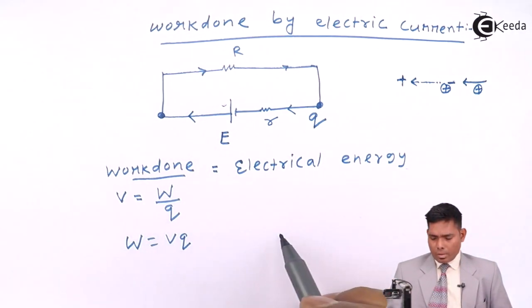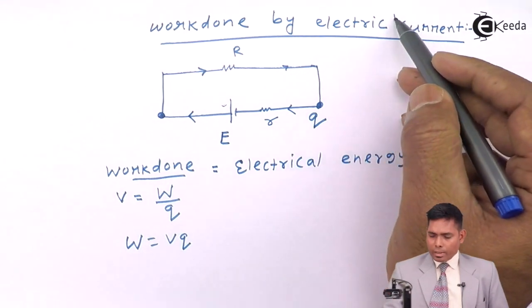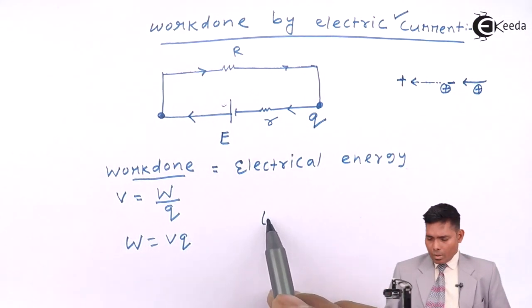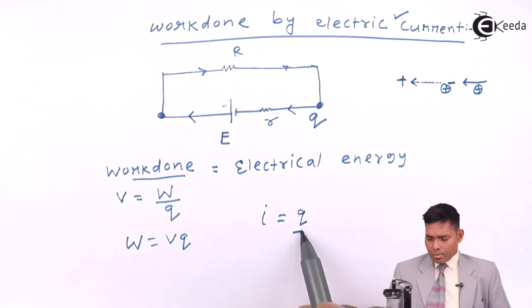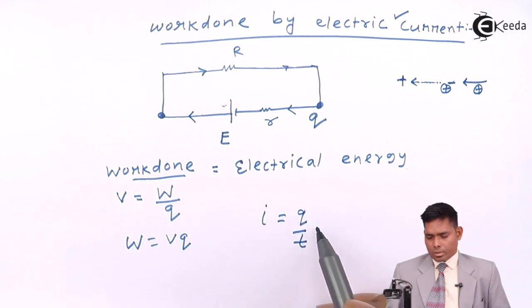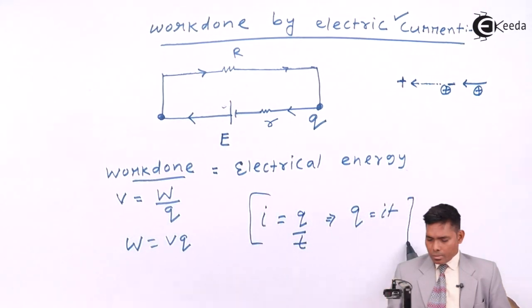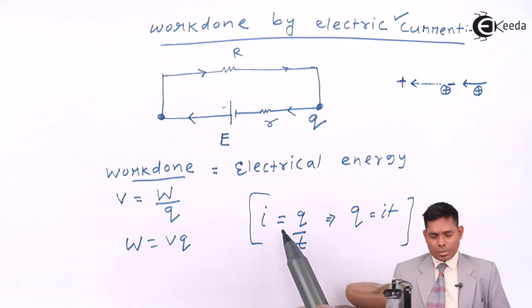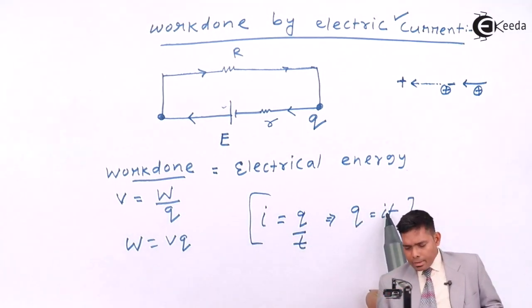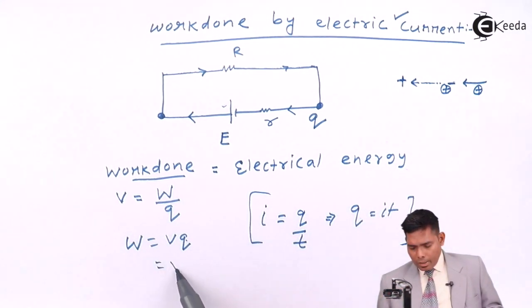In terms of electric current, I is Q by T. So Q is I into T. Now, if I write Q here as I into T,